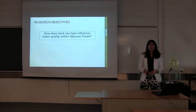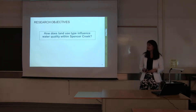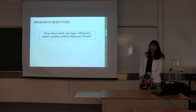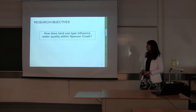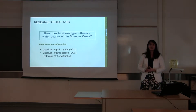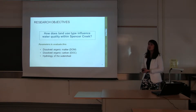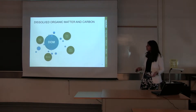This brings us to the question of how does land use type actually influence water quality within Spencer Creek. The parameters used to determine this are dissolved organic matter, dissolved organic carbon, and the hydrology of the watershed to quantify everything.